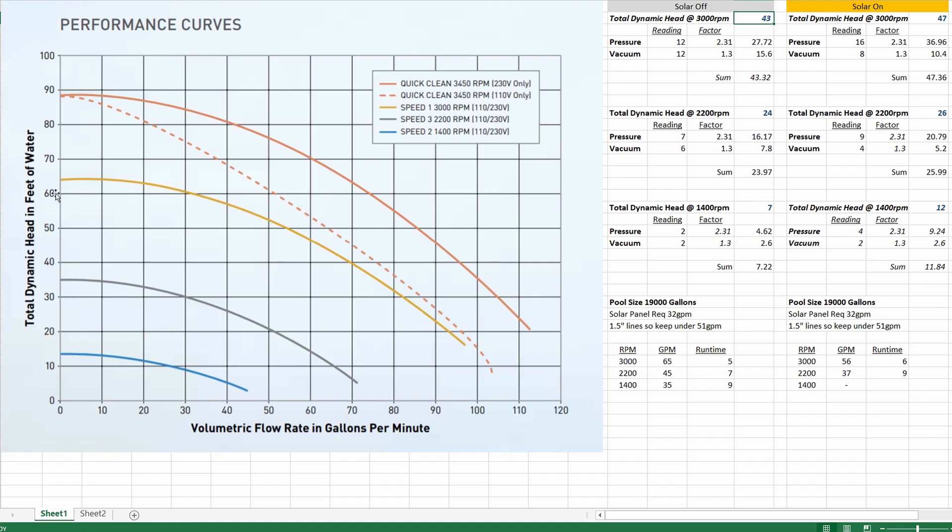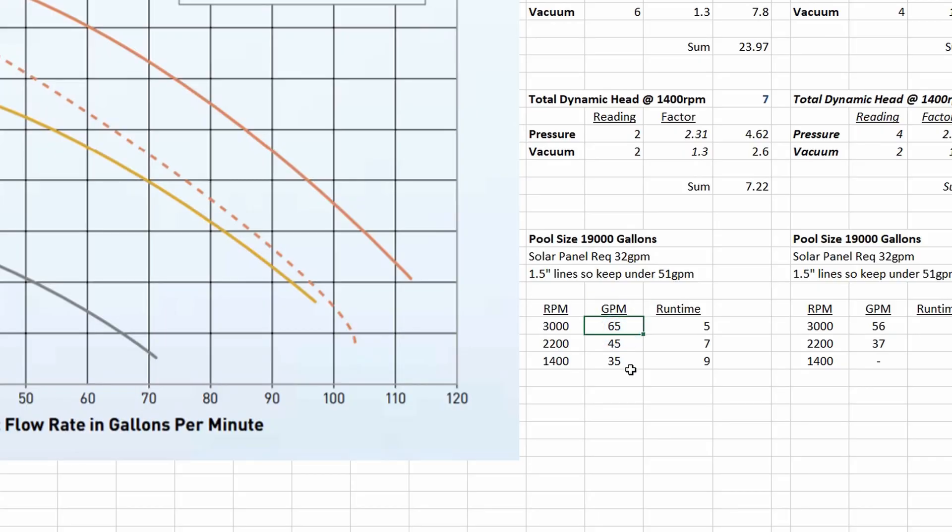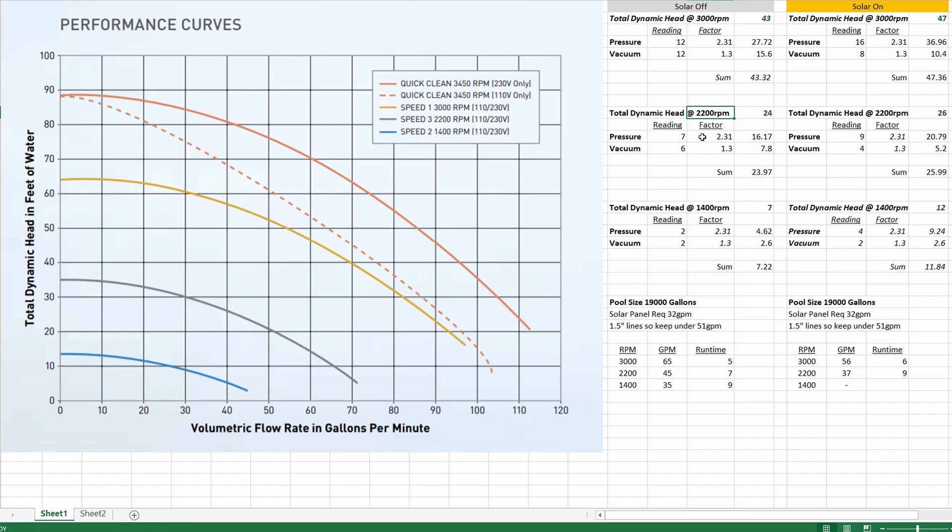So if we look on the left side here for the 3000 RPM curve which is this gold color here and look for where we'd say about 43 lies on the graph about here and track over you can see that we land somewhere between the upper 60s to just under 70 gallons per minute. So I'll call that about 65 gallons per minute down here at the bottom.